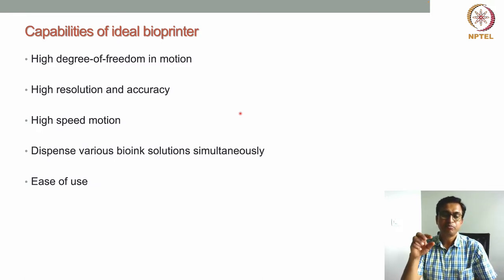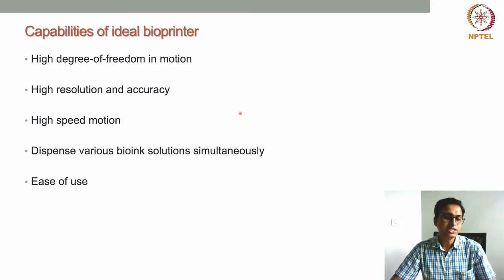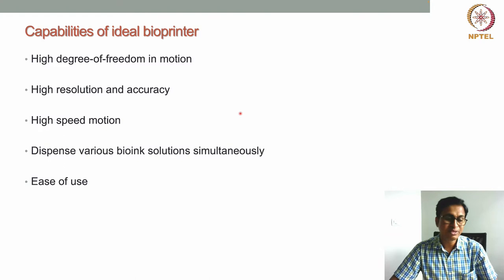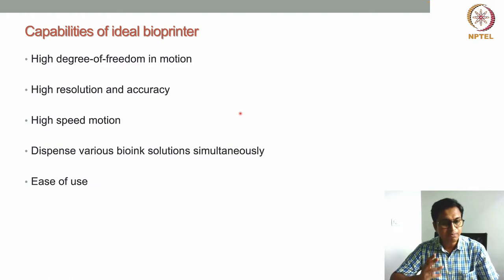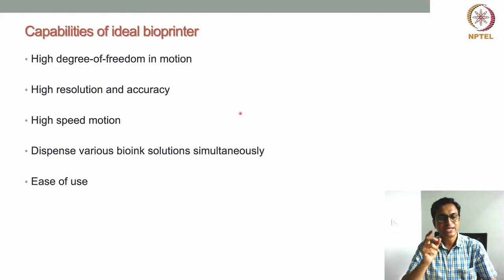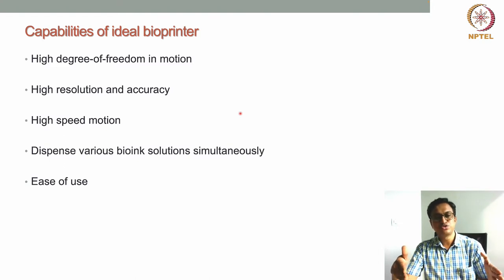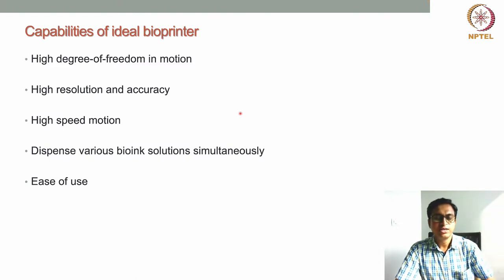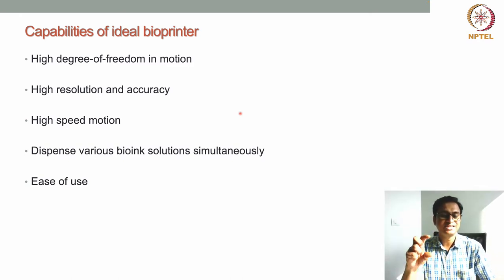High speed motion is another requirement for the ideal bioprinter. When thinking about printing artificial tissues and organs, the print head should have very high speed motion. Otherwise, printing even a centimeter-size tissue can take a few hours to a few days. We need a printer with very high speed motion so that printing time can be minimized.